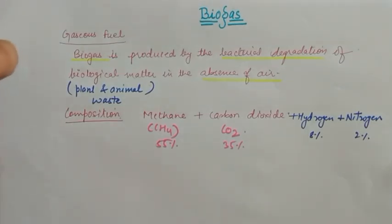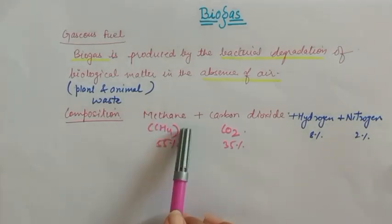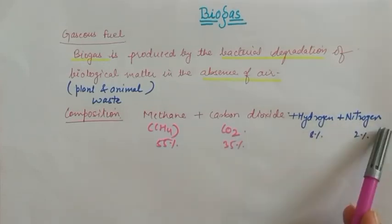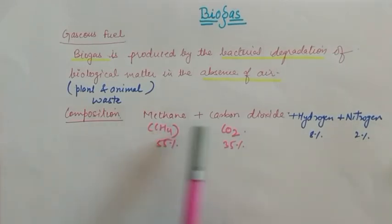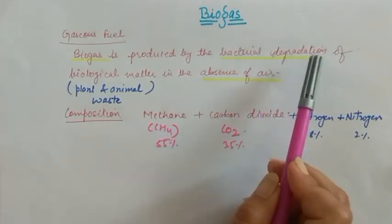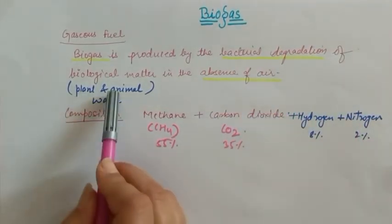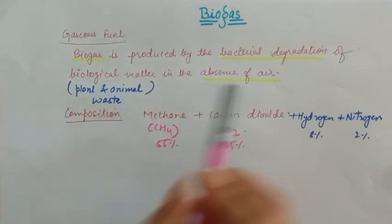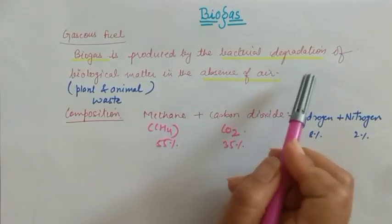So this is the composition of biogas — mainly methane and carbon dioxide. Methane is mainly used as a fuel. The gases present are methane, carbon dioxide, hydrogen, and nitrogen. These gases are produced by bacterial degradation — degradation caused by bacteria — of plant and animal waste. One very important condition: this degradation occurs in the absence of air.